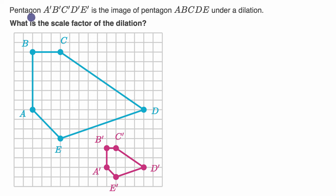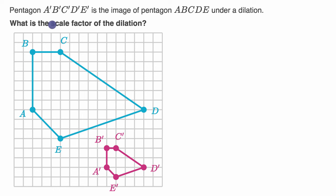We are told that pentagon A'B'C'D'E', which is in red right over here, is the image of pentagon ABCDE under a dilation. What is the scale factor of the dilation?